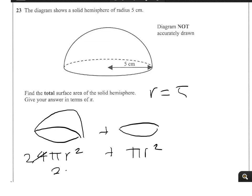So we've got 2 times pi times 5 squared, plus pi times 5 squared. Now 5 squared is 25, so the first part is going to be 50 pi. The second part is going to be 25 pi.